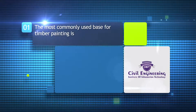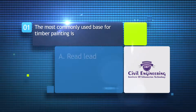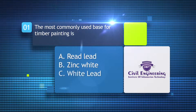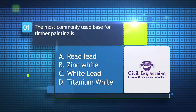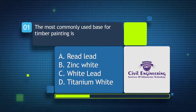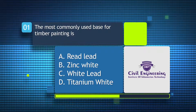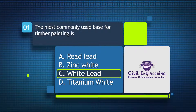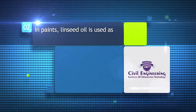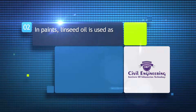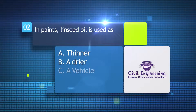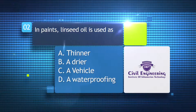The most commonly used space for timber painting is: A) red lead, B) zinc white, C) white lead, D) titanium white. In paints, linseed oil is used as: A) a thinner, B) a dryer, C) vehicle, D) a waterproofing base.